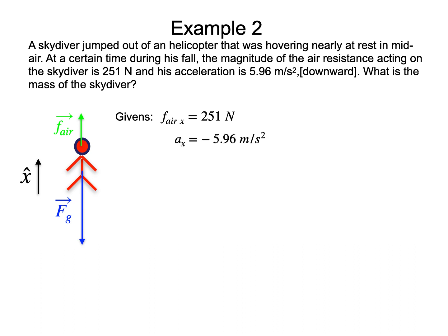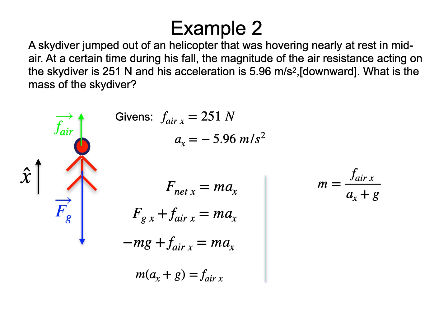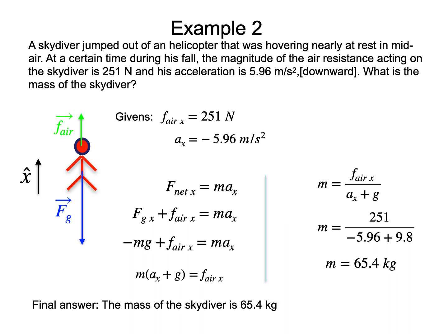We again start with Newton's second law expressed for the x-components. There are only two forces that make up the net force, so the x-component of the net force is the sum of the x-component of the gravitational force and the air friction. Replacing the x-component of the gravitational force with minus mg gives this. Since we want to evaluate the mass, we collect together the terms that involve the mass and isolate the mass. We supply the numerical values of the givens, using also the constant value for g at the surface of the Earth. The use of a calculator leads to 65.4 kg, which is our final answer for the mass of the skydiver.